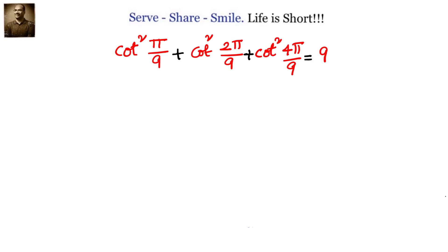Hello friends, welcome back, hearty welcome to you. Let us look at this interesting problem. We have to prove that cot square pi by 9 plus cot square 2 pi by 9 plus cot square 4 pi by 9 equals to 9.